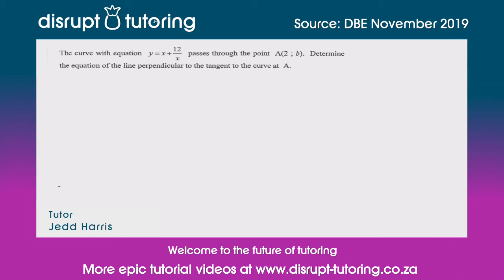Hey peeps, it's Jed here from Disrupt Tutoring and as always it's such a pleasure to join you today. We're going to deal with a calculus question, so let's dive straight in. We've got the curve with equation y equals x plus 12 over x, which passes through the point A=(2, b). We need to determine the equation of the line perpendicular to the tangent to the curve at A.